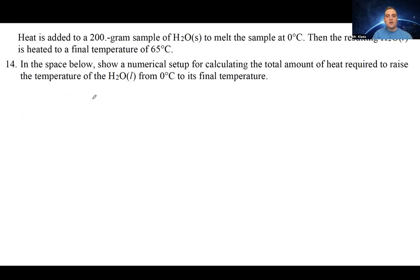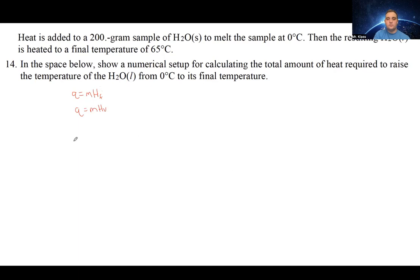Let's take a look at a problem that requires some math. Heat is added to a 200-gram sample of H₂O(s) — solid water, also known as ice — to melt the sample at zero degrees Celsius, which is the freezing point. Then the resulting liquid water is heated to a final temperature of 65 degrees Celsius. Since we're melting the sample, there's a phase change, so we use Q = mHf.